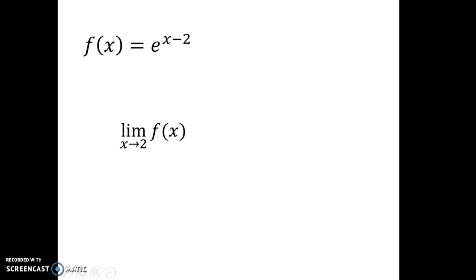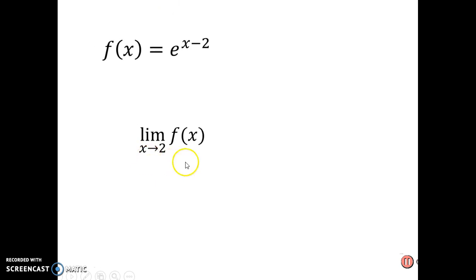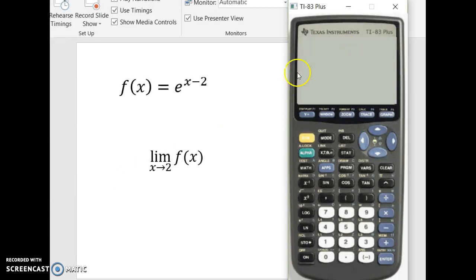So here we have a function, and we want to take its limit as x goes towards 2. So what I need to do first is put the function in. So e, right above the natural log, to the x minus 2. And I'm just going to go ahead and graph it.